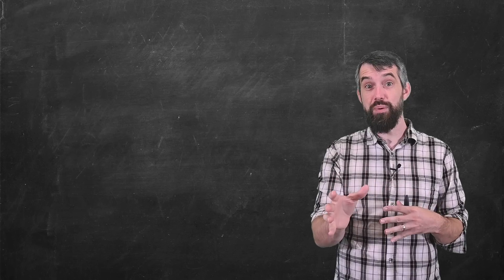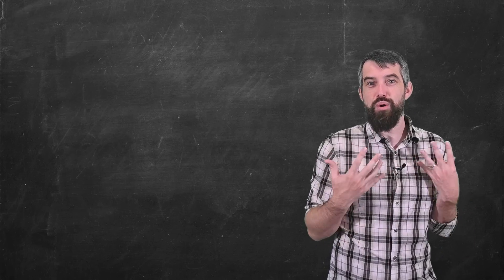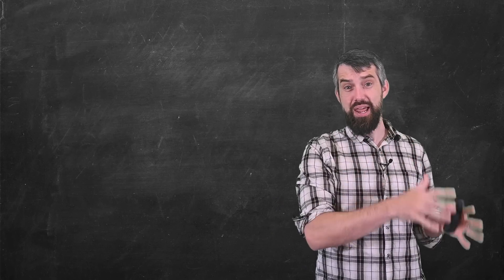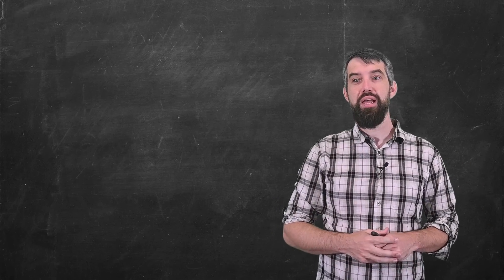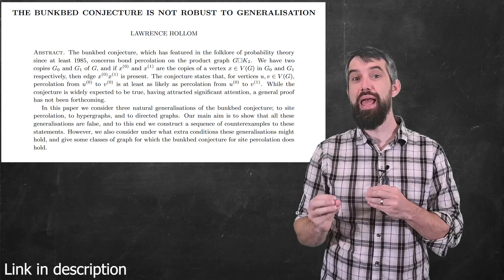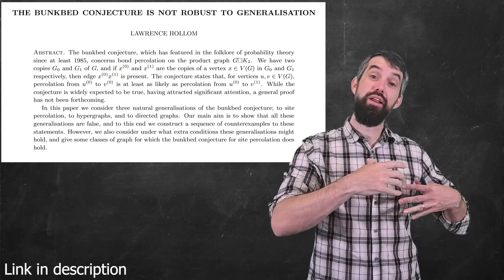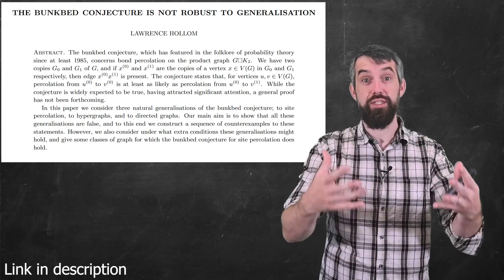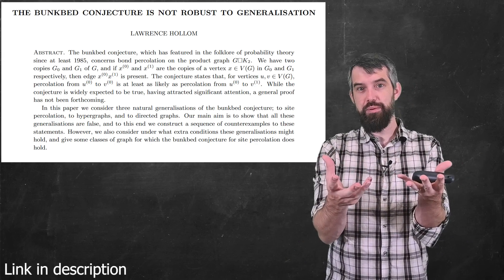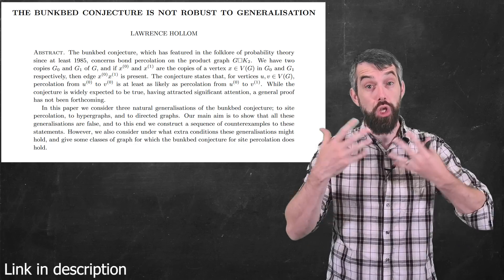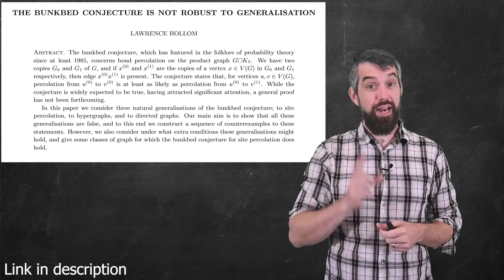And what's interesting is that this counterexample was discovered now not by the computer. It was discovered, quote unquote, by hand. Okay, so to understand that, we actually have to jump now to a different mathematician who was working at the same time. This is a mathematician by the name of Hollum. And in 2024, he released a paper that was trying to look at generalizations of the bunkbed conjecture. And basically the idea is we have the normal bunkbed conjecture, but what if we generalize it to larger settings, can we disprove its generalizations? And indeed we can.